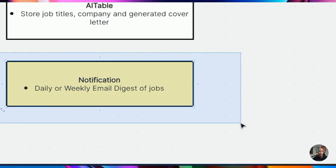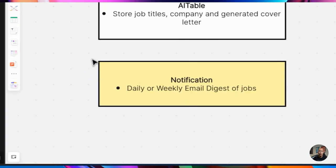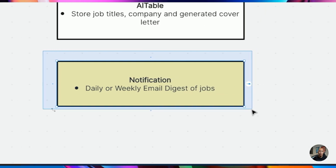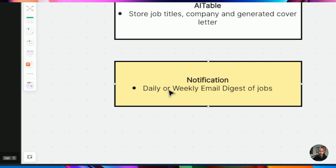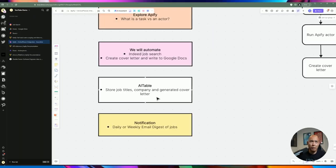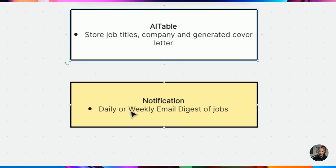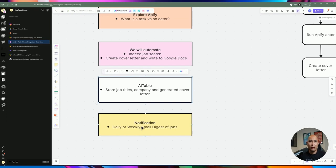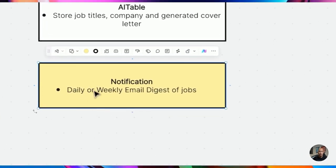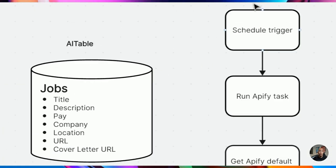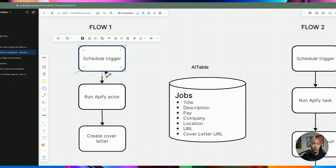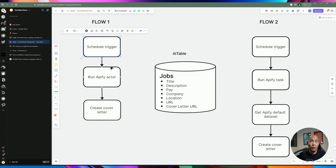I'm not going to cover the notification aspect in this tutorial, but I've covered it in my previous video on Upwork — it grabs information from a table based on a column that signifies whether that job has been sent to us via email digest. We're going to set up a table to accommodate this step, but we won't be covering the full notification automation piece. We're going to set up two automations in Active Pieces, each triggered via a schedule.